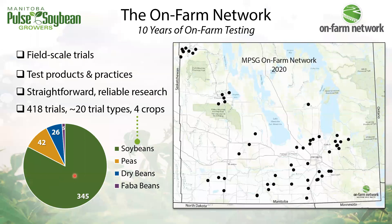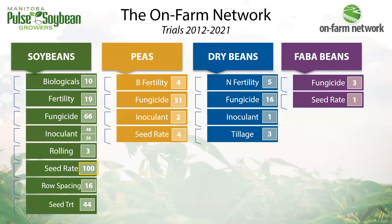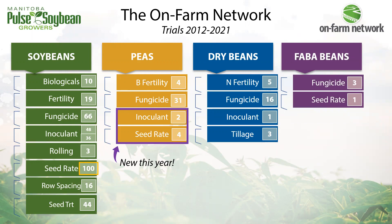We've now conducted more than 400 trials across Manitoba, mainly in soybeans but actively expanding into the pulses. These are the range of questions we've investigated over the last 10 years — from plant establishment to fertility, fungicides, biologicals, and more. The numbers beside each trial type indicate how many trials of each type have been completed. Soybean seeding rates hit 100 trials this year, and we also investigated new pulse trial types including pea inoculant and seeding rates.